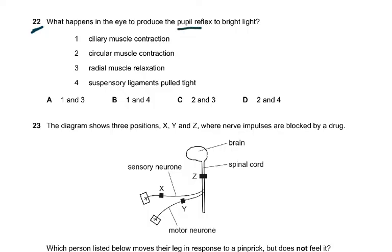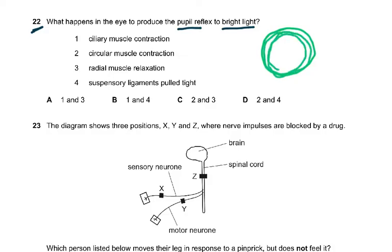Question 22 asks what happens in the eye to produce the pupil reflex to bright light. There are two different things: accommodation (near and distant vision) and the pupil reflex. The iris has circular muscles and radial muscles. The pupil is an aperture — a hole that looks dark because there is no light inside.